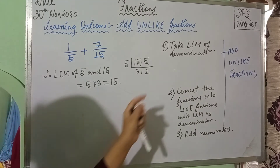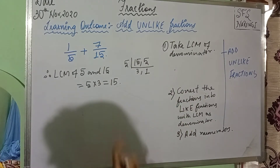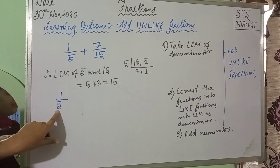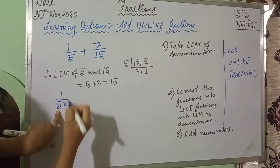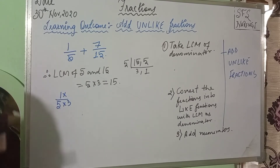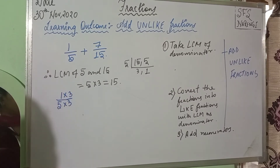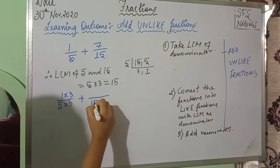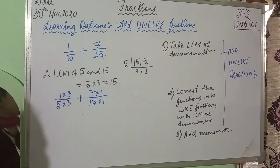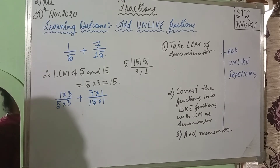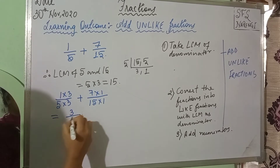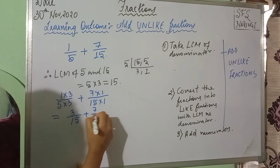My next step is to convert the fractions into like fractions with LCM as the denominator. So I will convert 1 by 5. I will get 15 when I multiply 5 by 3. Since I am multiplying the denominator with 3, I will also multiply the numerator with 3. Plus, 15 multiplied by 1 is 15, so I can leave 7 by 15 as it is — any number multiplied by 1 is the number itself. After I multiply, I will get 3 by 15 plus 7 by 15.